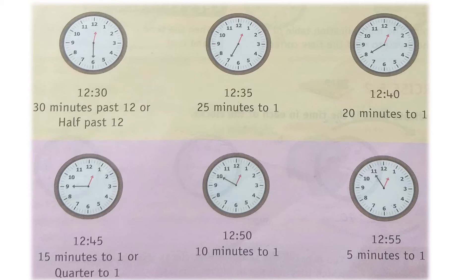In the next picture, the minute hand is at seven, showing 35 minutes — seven fives are 35. So the time is 12:35. We can also say it as 25 minutes to one, because there are 25 more minutes remaining to reach one o'clock.